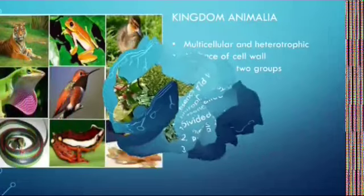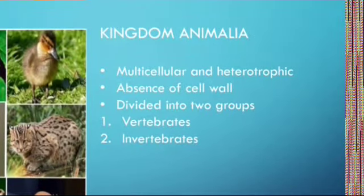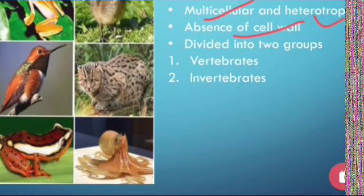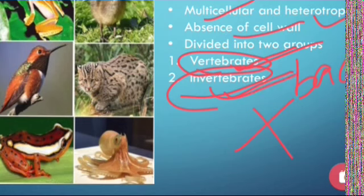Coming to the next kingdom, that is Kingdom Animalia. Animals are multicellular. They are heterotrophic in nature, meaning they do not prepare their own food — they are dependent upon others for food. There is an absence of cell wall; in plant cells the cell wall is present, but in animal cells it is absent. They are divided into two groups: vertebrates and invertebrates. Vertebrates are organisms which have a backbone, and invertebrates do not. For example, human beings come under vertebrates because they have a backbone, while insects come under invertebrates.